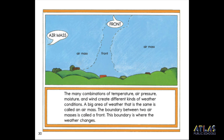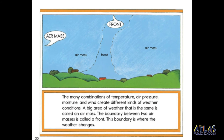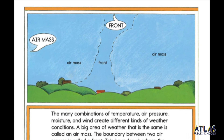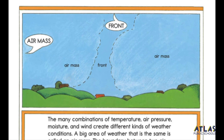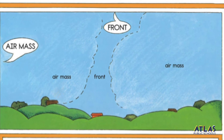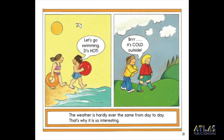The many combinations of temperature, air pressure, moisture, and wind create different kinds of weather conditions. A big area of weather that is the same is called an air mass. The boundary between two air masses is called a front. This boundary is where the weather changes. The weather is hardly ever the same from day to day. That's why it's so interesting.